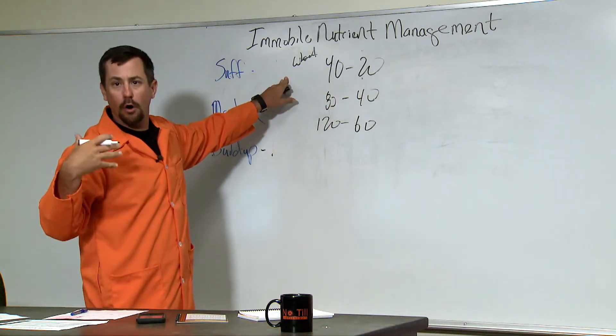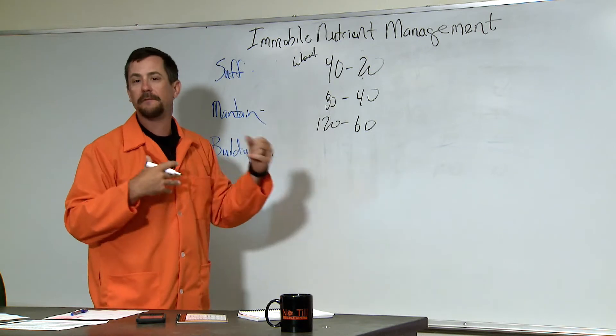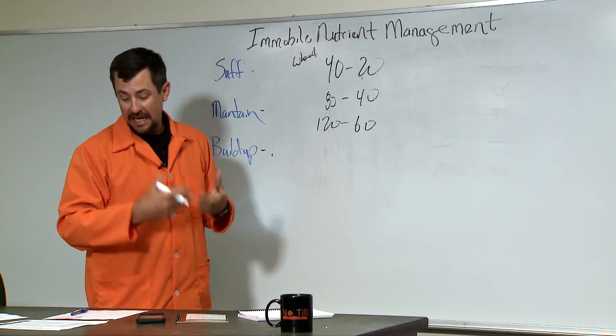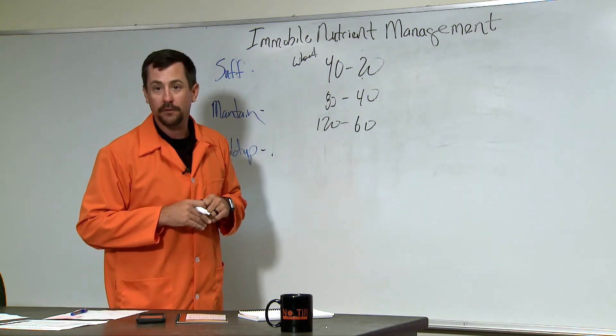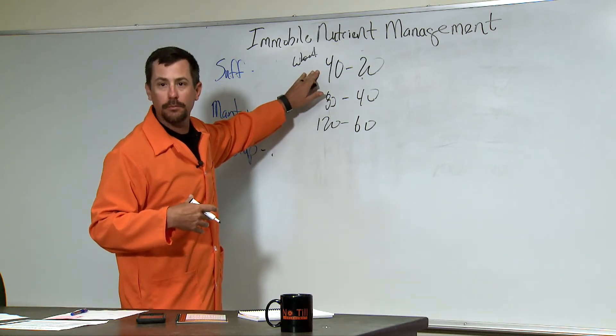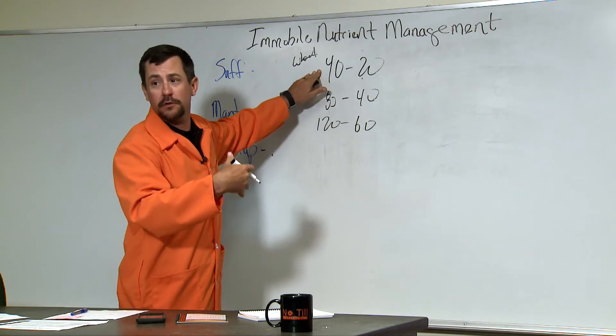Now, if we use the normal Oklahoma starter, a lot of producers in Oklahoma are going to put anywhere between 50 and 75 pounds of 18-46-0 into their drills with the seed. They're actually applying 34 pounds. So, if you put on that starter and you're growing a 40 bushel crop, you're applying more than that crop's removing and you will build your soil test.